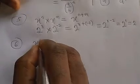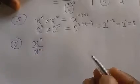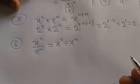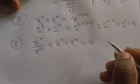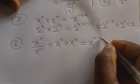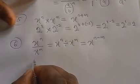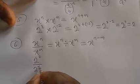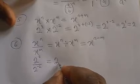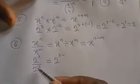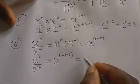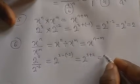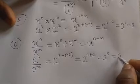Law number 6: x raised to power n over x raised to power m (i.e., x^n divided by x^m) equals x raised to power n minus m. Example: 2³ over 2^(−2) gives 2^(3−(−2)) = 2^(3+2) = 2 raised to power 5, which equals 32.